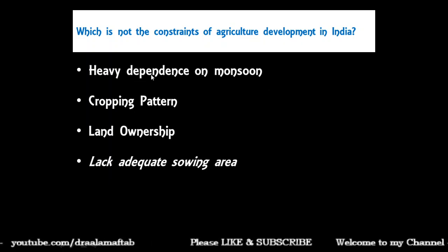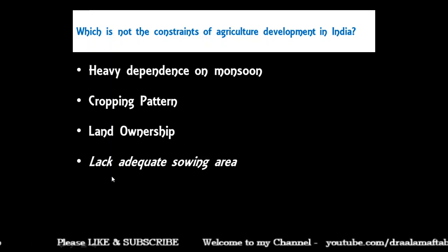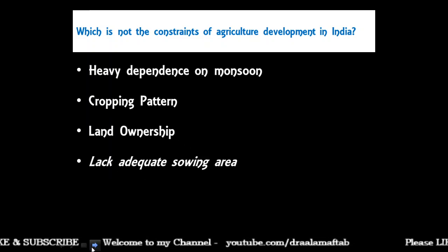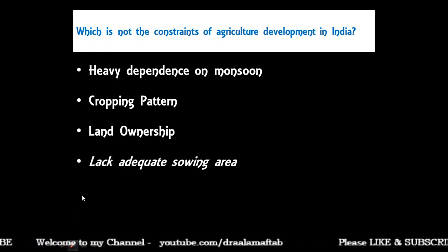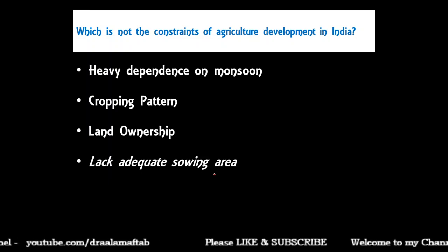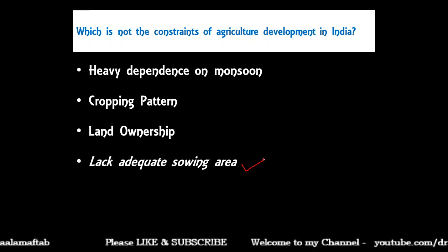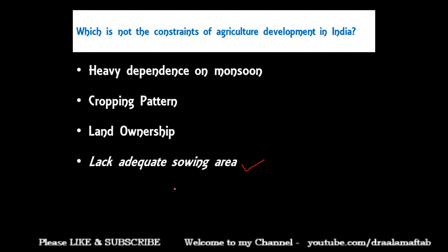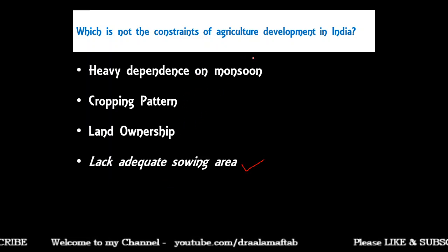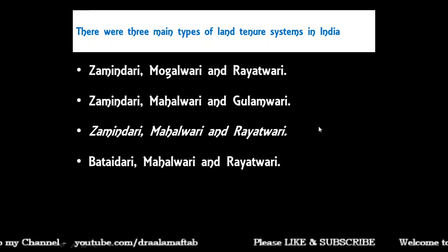Which of the following is NOT a constraint of agriculture development in India — heavy dependence on monsoon, cropping pattern, land ownership, or lack of adequate sowing area? The correct answer is 'lack of adequate sowing area' — that is not a constraint. Heavy dependence on monsoon, cropping pattern, and land ownership are the actual constraints of agriculture development in India.